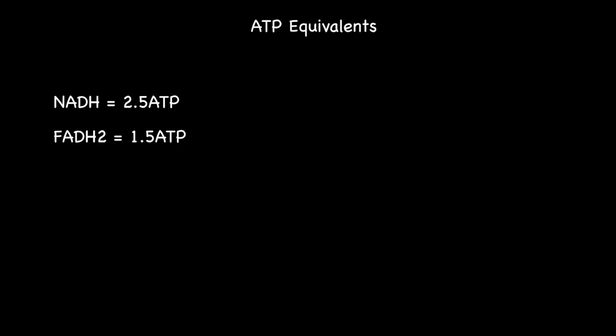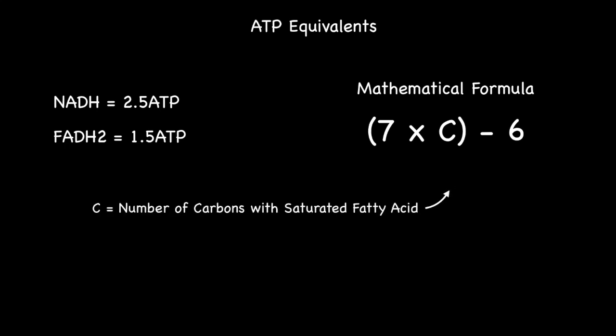If this is what you have been taught during your biochemistry lectures then use the following mathematical formula: open brackets 7 times C close brackets minus 6 for calculating the ATP yield for even numbered saturated fatty acids where the letter C represents a number of carbons within the saturated fatty acid.